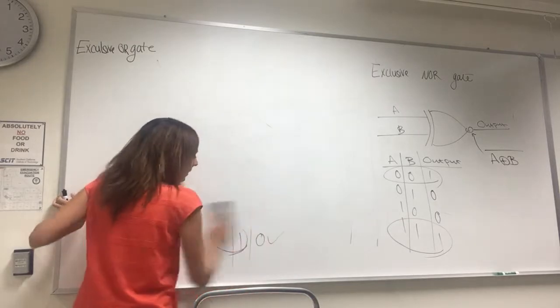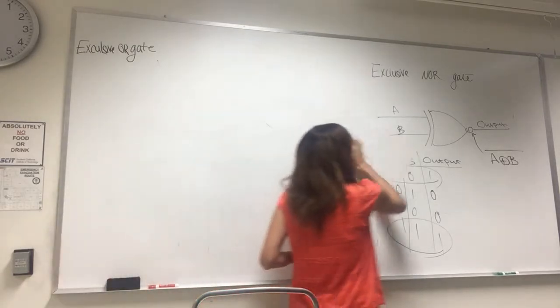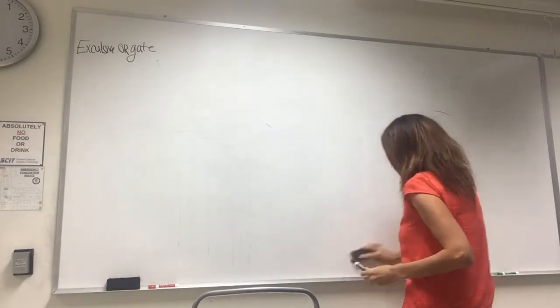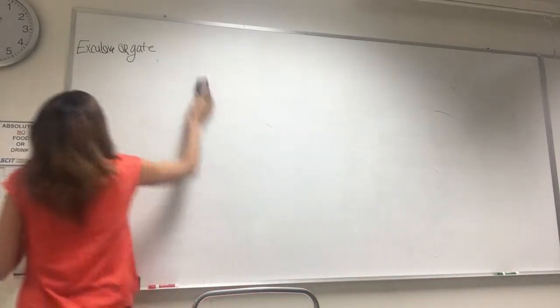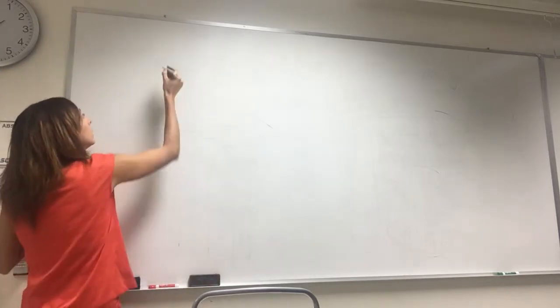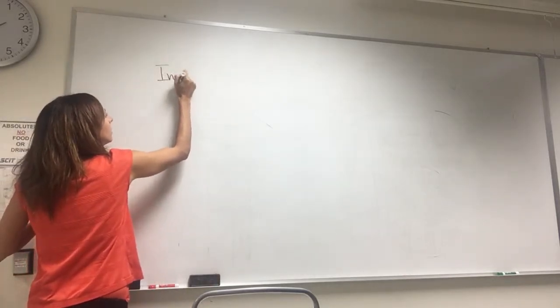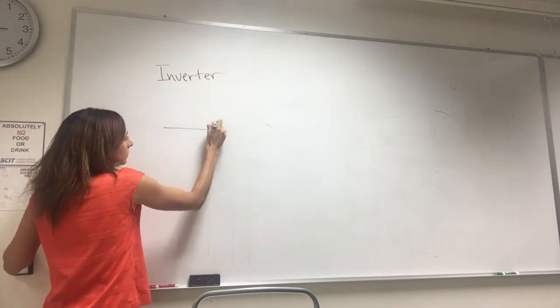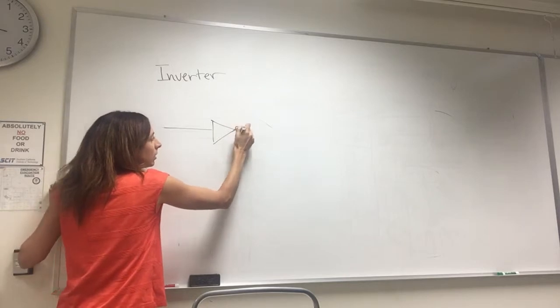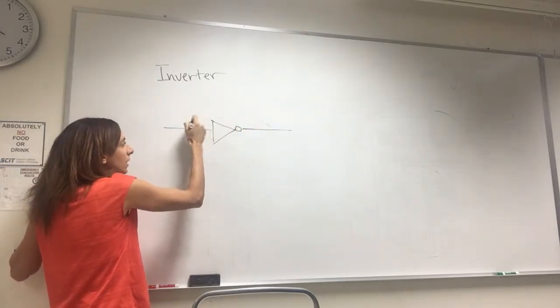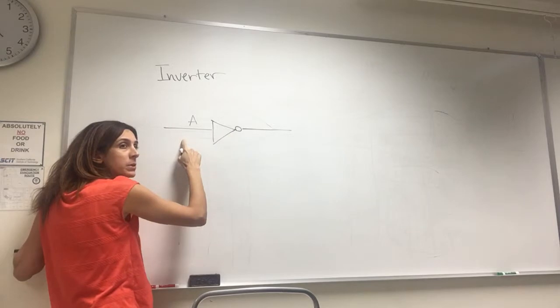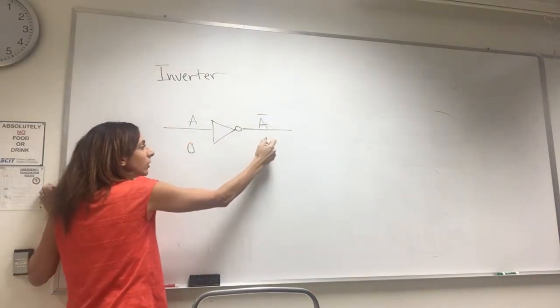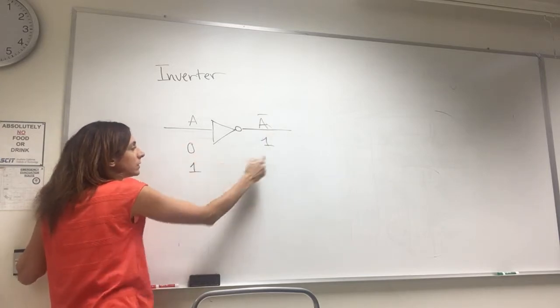And there is a gate called NOT gate, so it's inverter or NOT gate. So this is a symbol. Basically what it means, the output is the opposite of the input. So if I have zero here, I get one at the output. If I have one here, I get zero at the output.